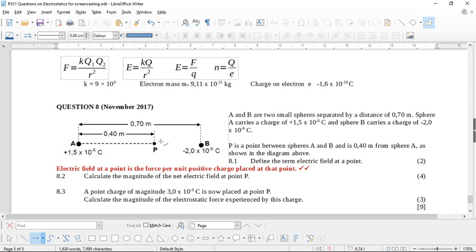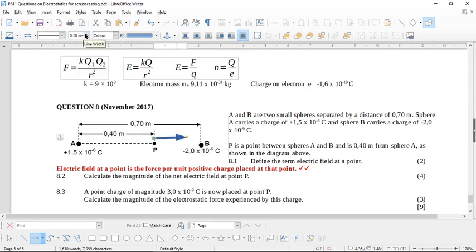What will A do to a charge placed at P? A is positive. The charge placed at P is positive. It is going to be repelled in this direction. Then what will happen here with B? B is negative. P is the unit positive charge placed at P. So positive is attracted to negative. Both of these forces are going to go in this direction. So when we find the net electrical field, we know that the signs of them are going to be the same because they're both vectors going in the same direction.